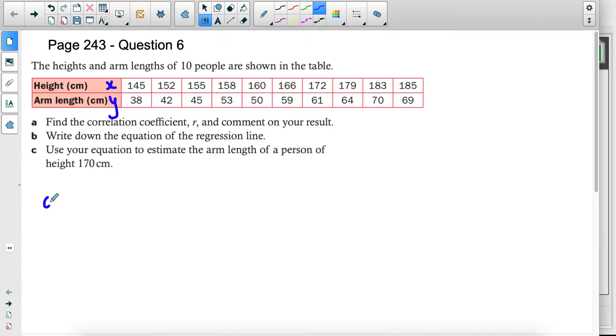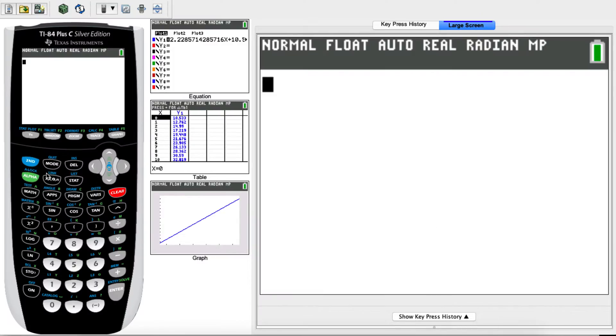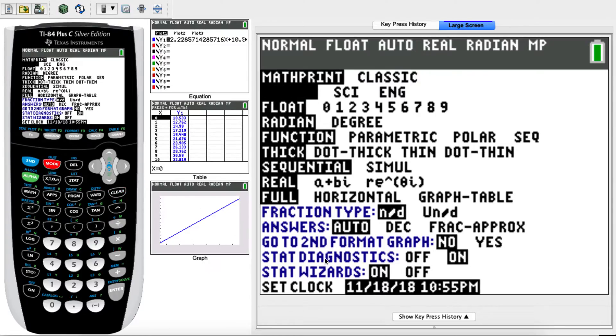Now, the first question says find the correlation coefficient R and comment on your results. So we'll need the calculator for that. First thing before you start, you need to make sure that you have diagnostic on. So just to double check, if you've done it in class, you don't have to do it again.